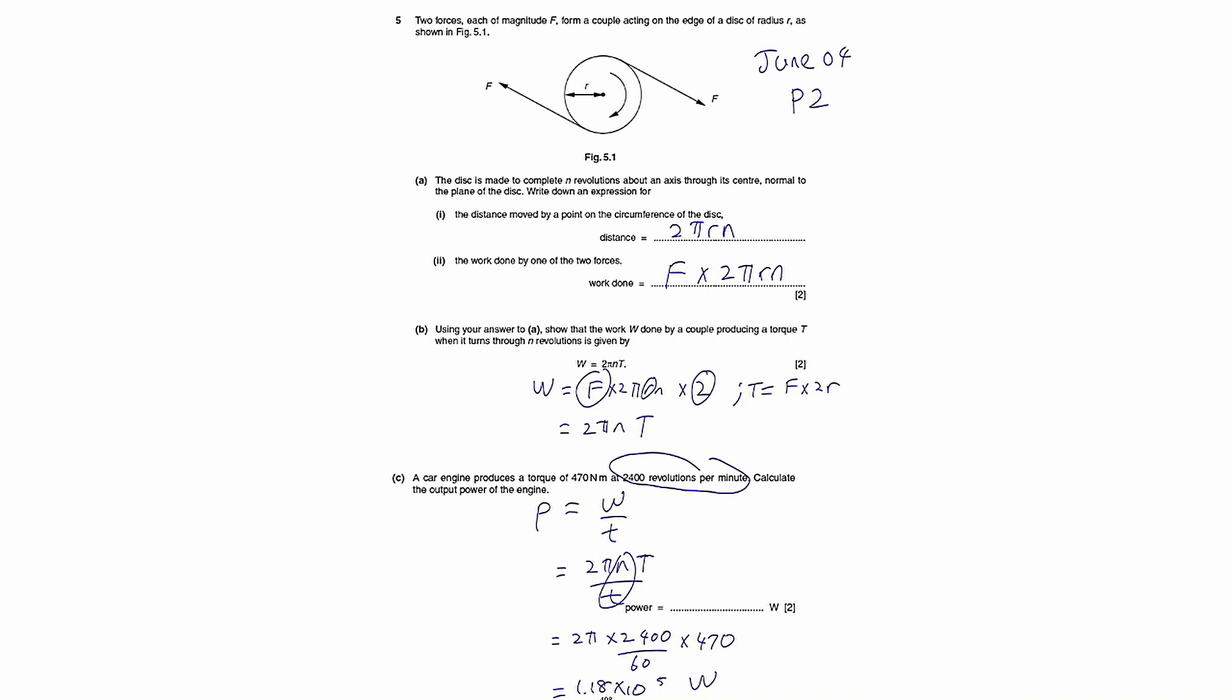So we write that down first. We can take out the F and one r and one 2. So these three, when I take out, you can replace as t. Then you'll be left with 2πn, so 2πnt.